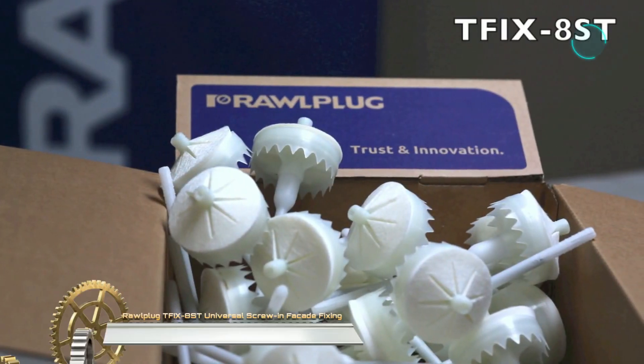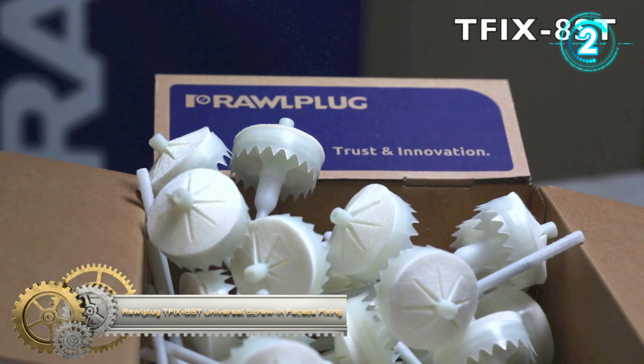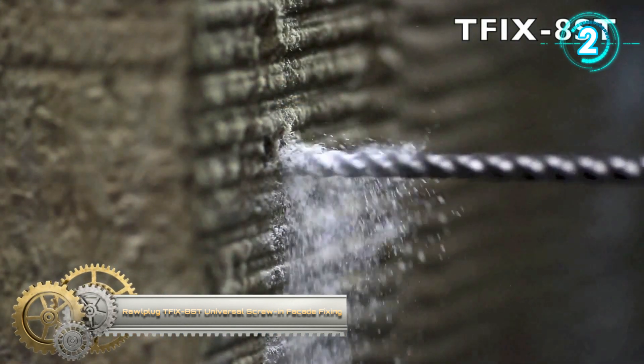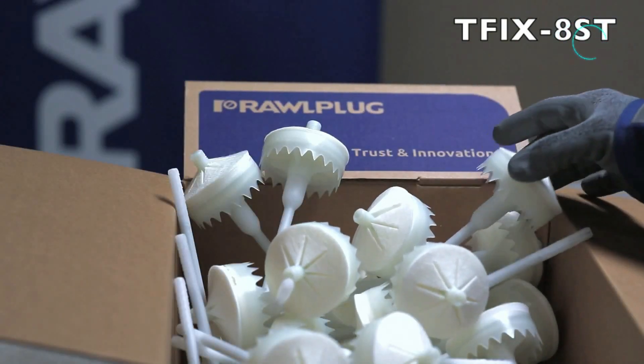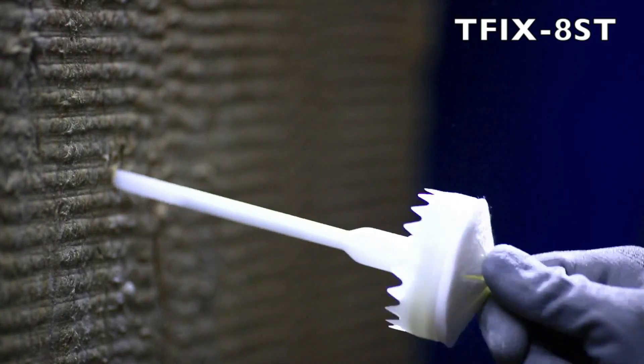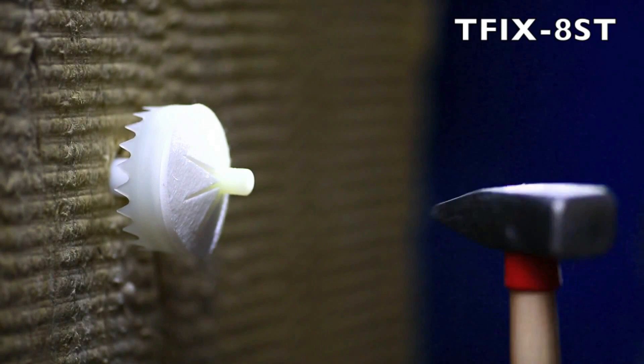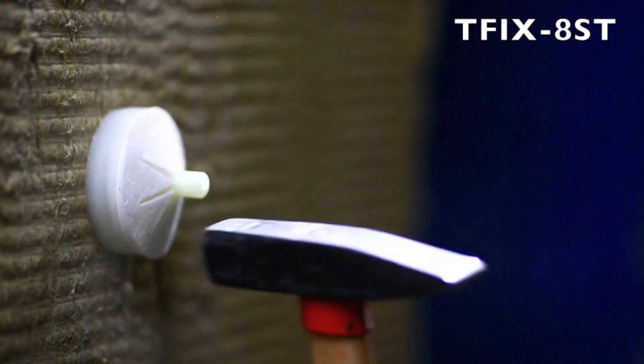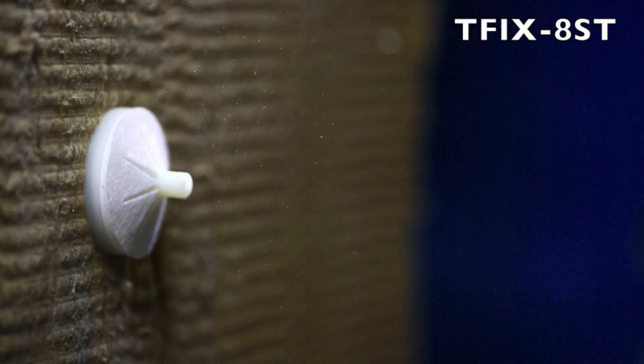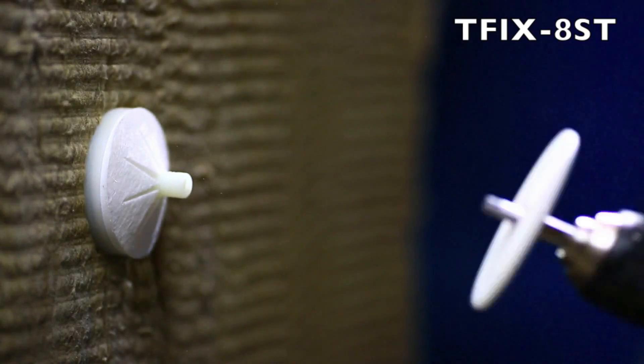Rawlplug TFIX8 universal screw and facade fixing. This versatile screw and facade fixing has an integral perforator of insulation. The first thermal insulation combination screw fixing that can be countersunk. Together with the integrated insulation cap, the accurate countersink setting automatically sets the fixing flush with the insulation layer.